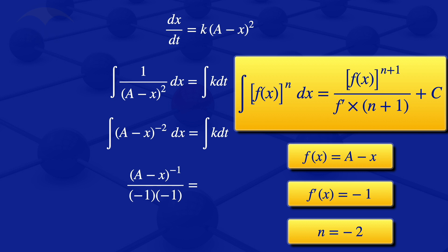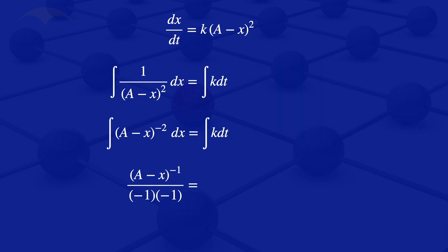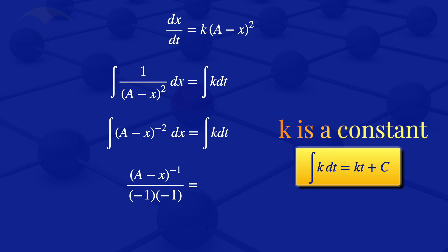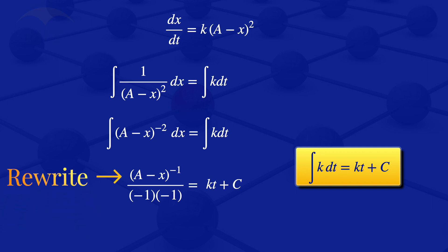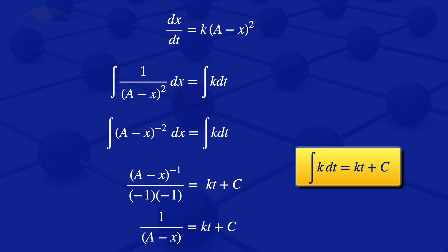For the right-hand side, k is a constant, so the integral of k with respect to t gives kt plus the constant of integration c. Simplifying the left-hand side: minus 1 times minus 1 equals 1, and (a minus x) to the power minus 1 can be rewritten as 1 divided by (a minus x). So we have 1 divided by (a minus x) equals kt plus c.